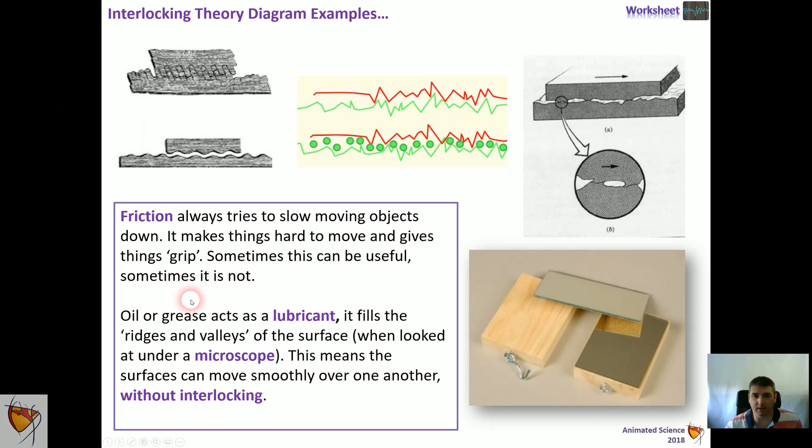Now what you can do, of course, is use lubricant, and the lubricant, like oil, would fill in the ridges and valleys or crevices, and that would stop the surfaces from interlocking. So this picture here shows lubrication in action. So you could write a few notes about that.